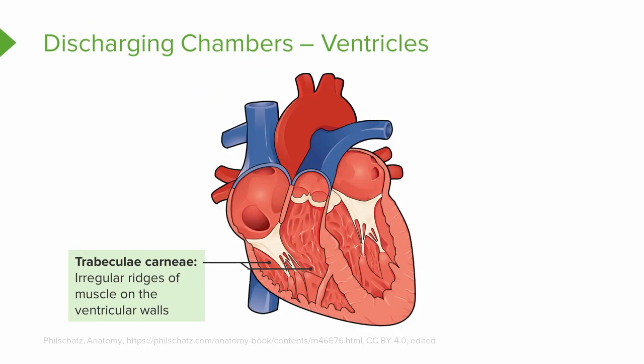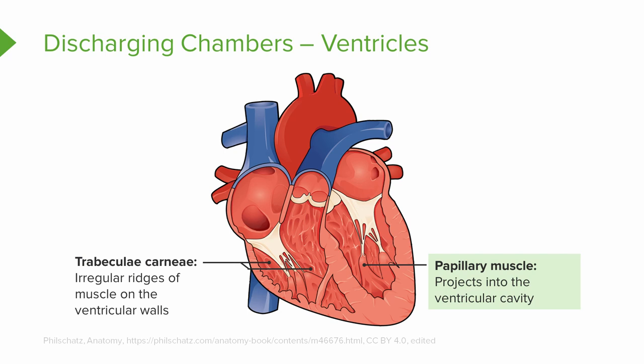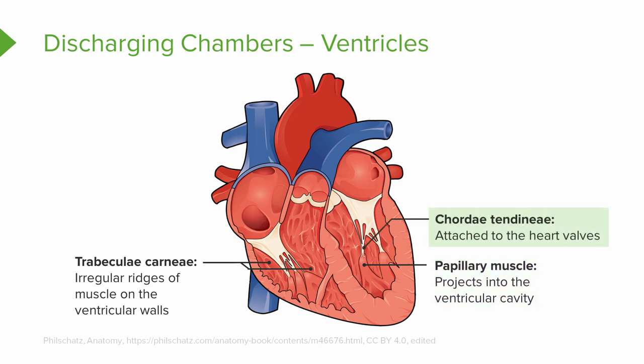Within these ventricles, we have structures known as the trabeculae carniae, which are irregular ridges of muscle on the ventricular walls. We also have the papillary muscles, which project into the ventricular cavity and are anchored by little cords known as chordae tendineae. These are attached to the heart's valves.